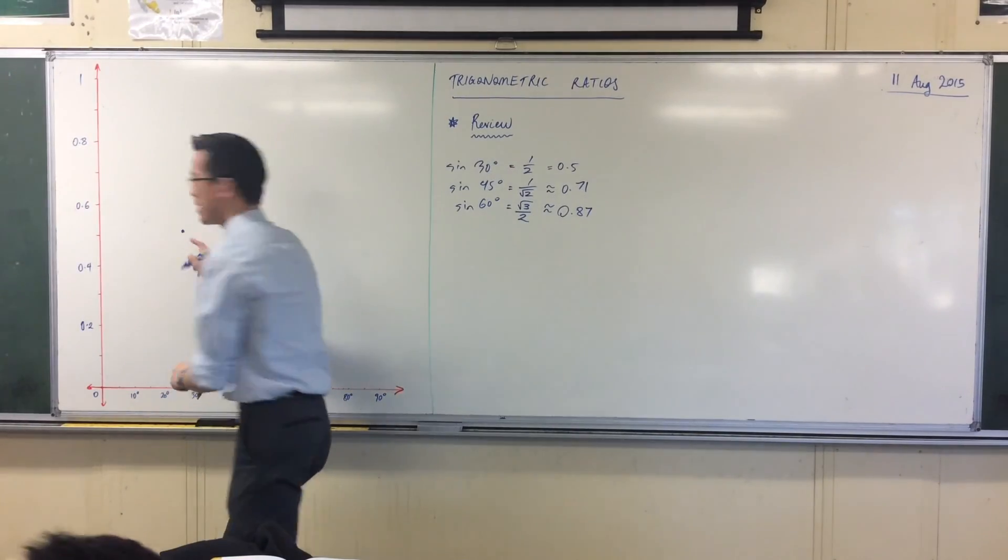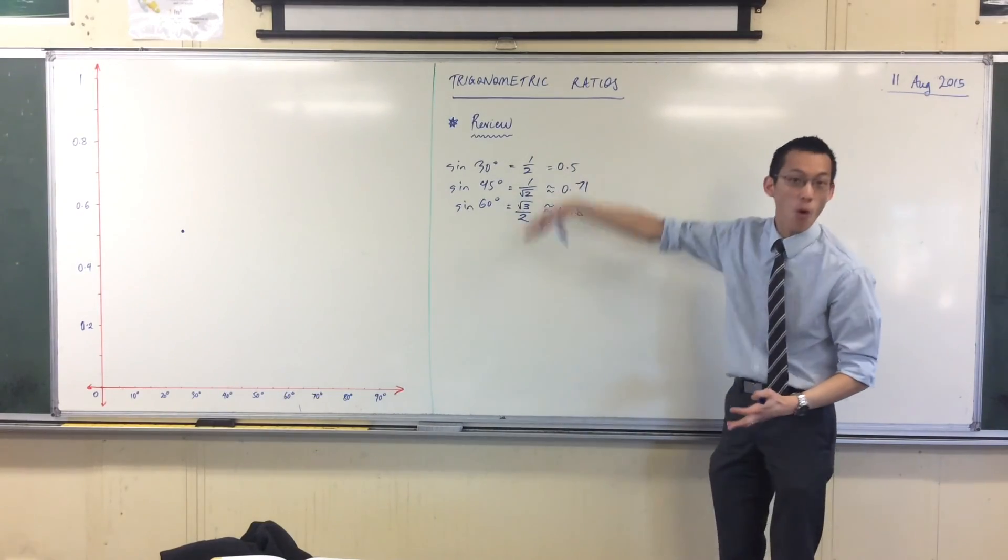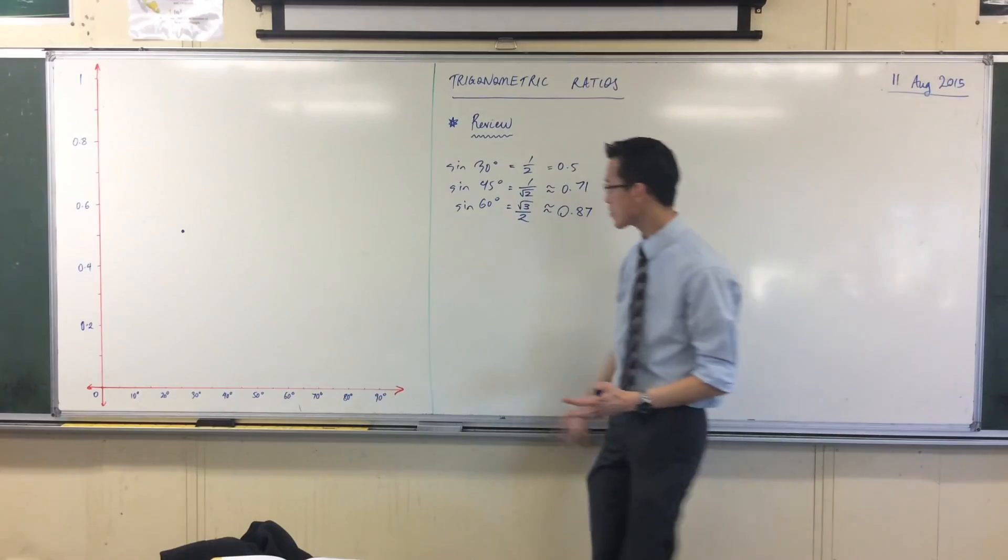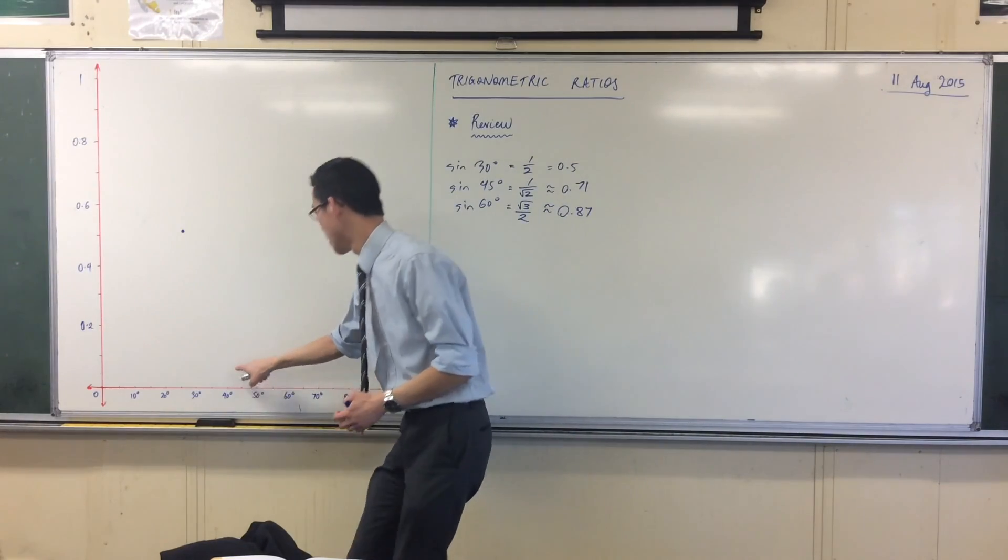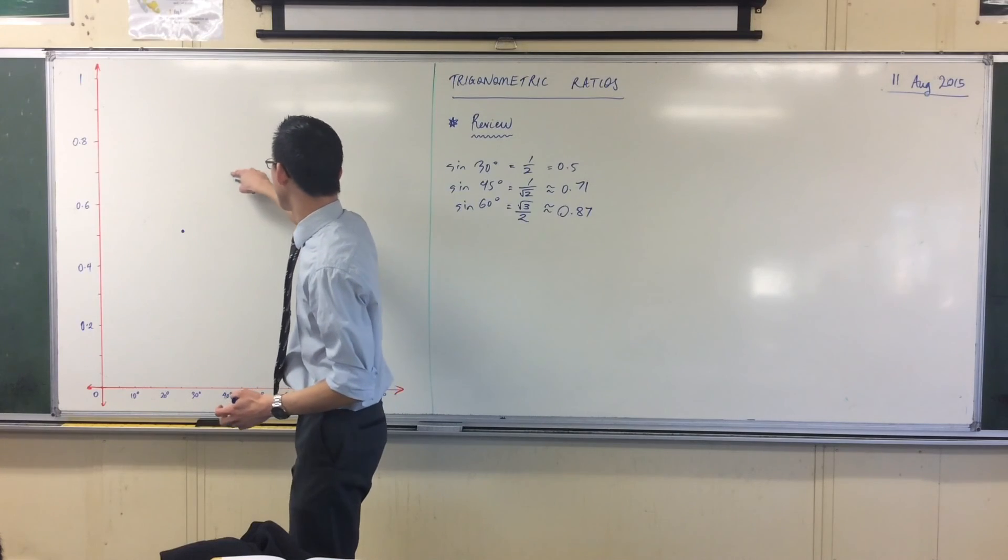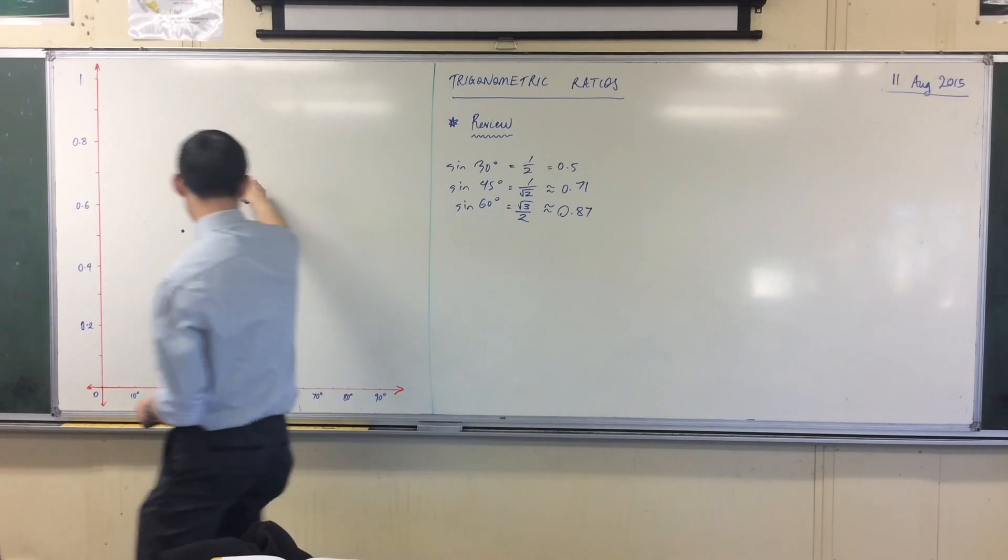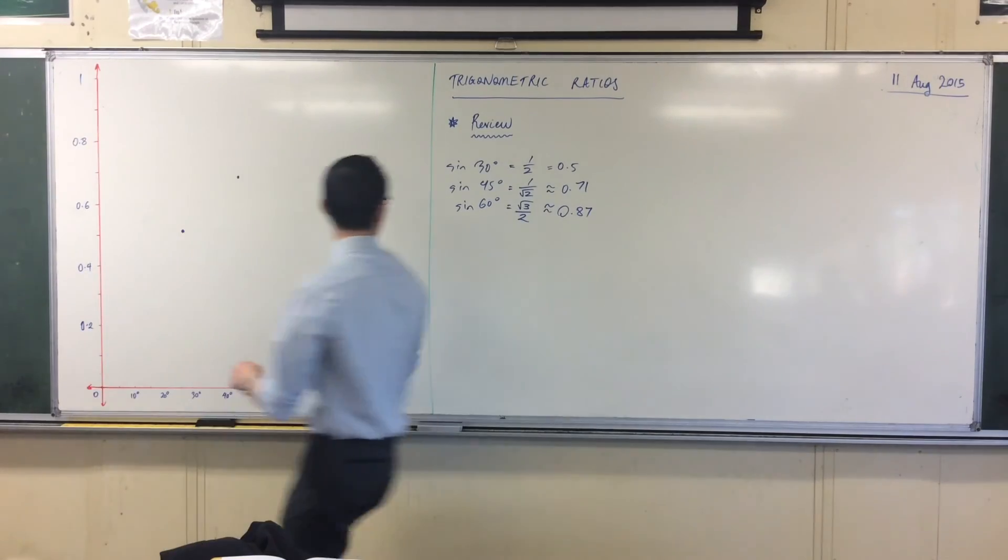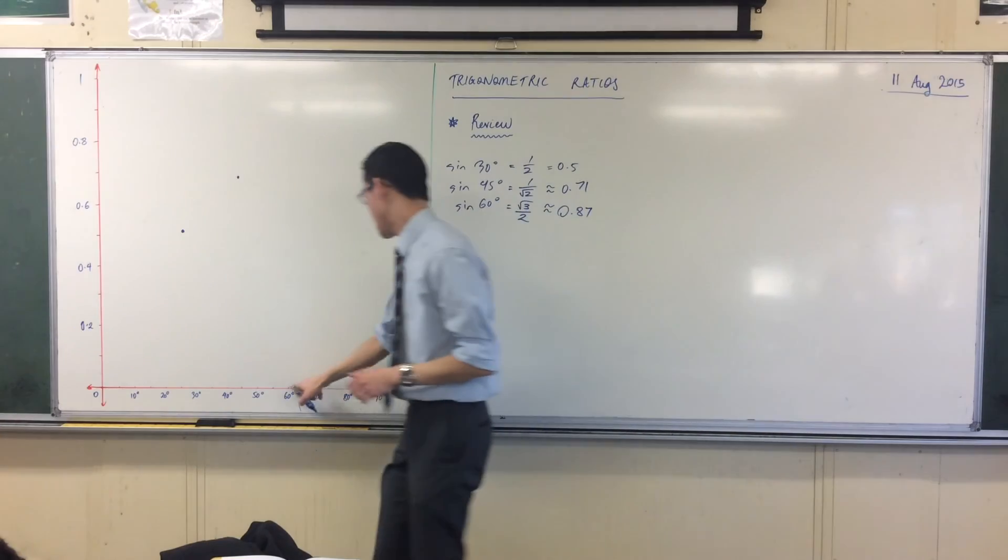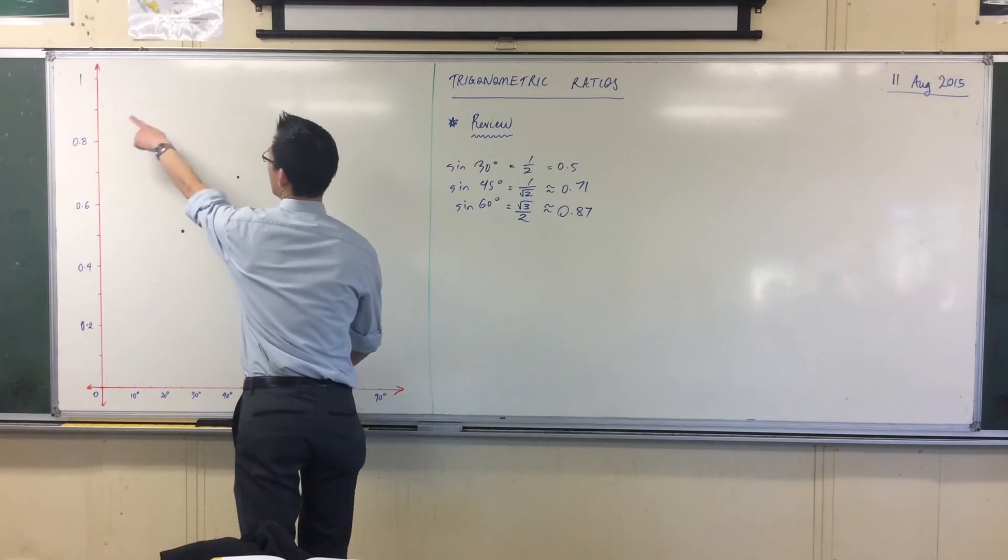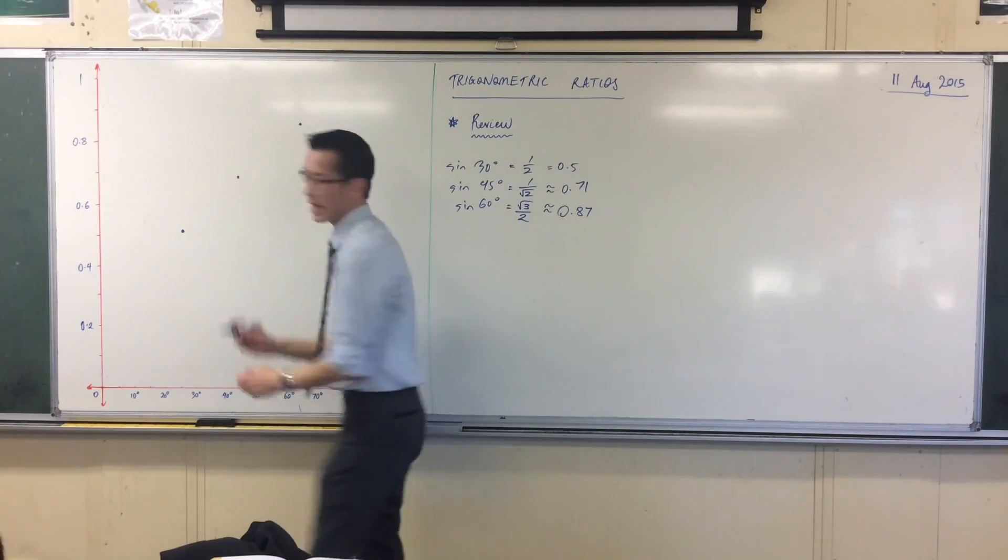Sine 45, that's about 0.71. So here's 45 between 40 and 50. So I'm going to come all the way up to about there. That's a bit above 0.7. So just make sure I do that properly. And my last one was 60 degrees, about 0.87. There's 60. 0.87 is going to be somewhere around there.